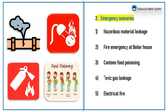Second, Emergency Scenario. We have to choose one of the emergency scenarios as listed below: Hazardous Material Leakage, Fire Emergency at Boiler House, Canteen Food Poisoning, Toxic Gas Leakage, or Electrical Fire. Like this, we have to select one Emergency Scenario.